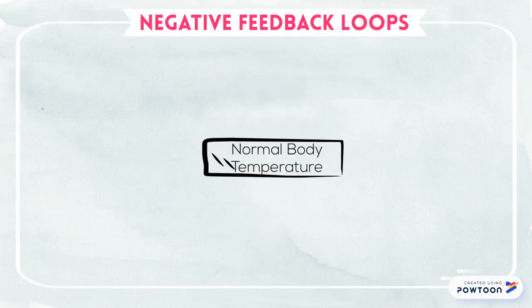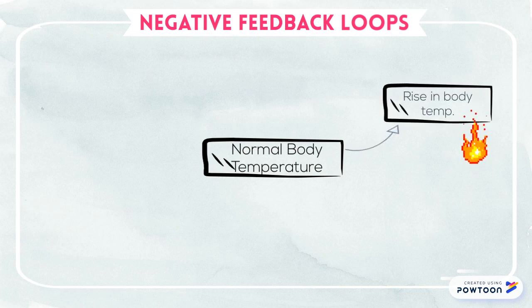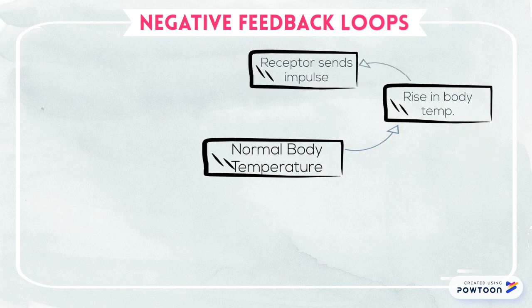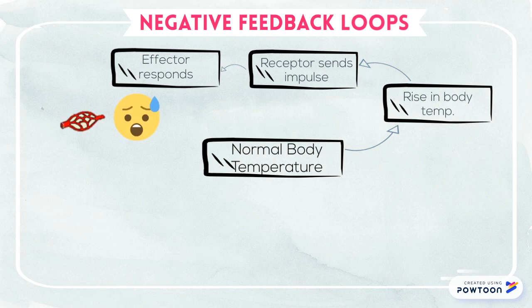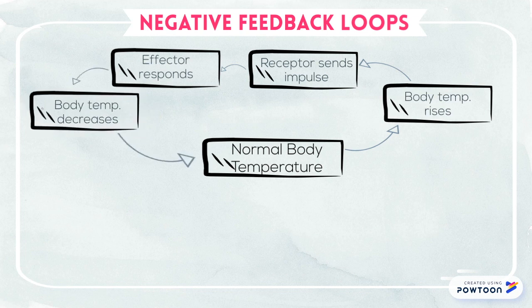Let's use body temperature as an example. When nerves sense a rise in body temperature, a nerve receptor is stimulated by this change. The receptor sends the nerve impulse to the hypothalamus, which is the brain's regulating center. The brain then commands the effectors — in this case the sweat glands and the skin blood vessels — to create a response. The sweat glands produce sweat, which evaporates to cool the body, and the blood vessels dilate so that heat from the body radiates and releases from the skin's surface. The body temperature then decreases.